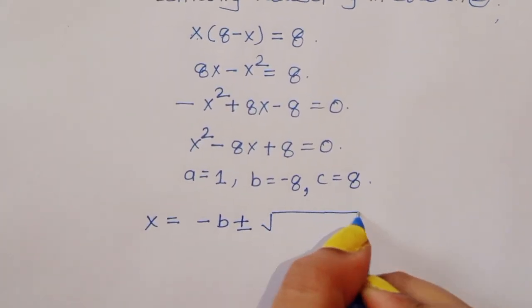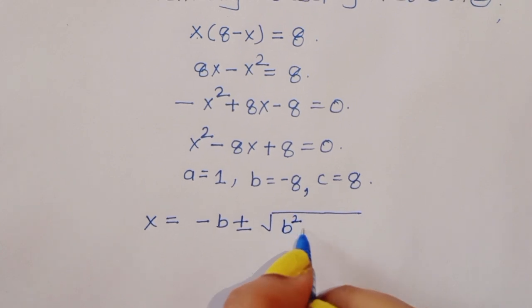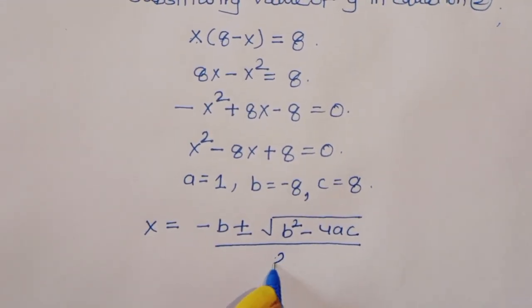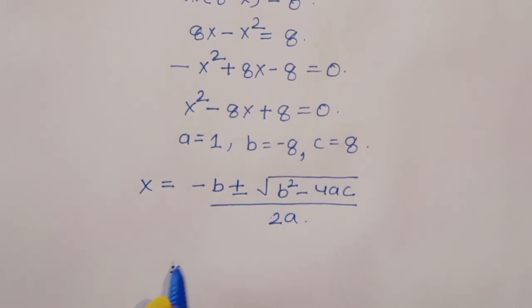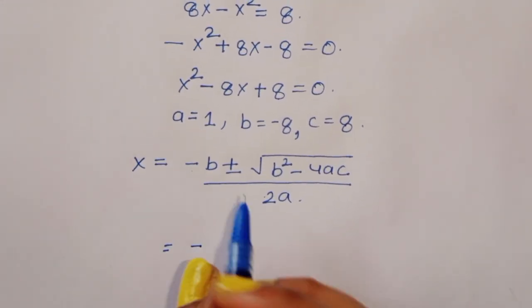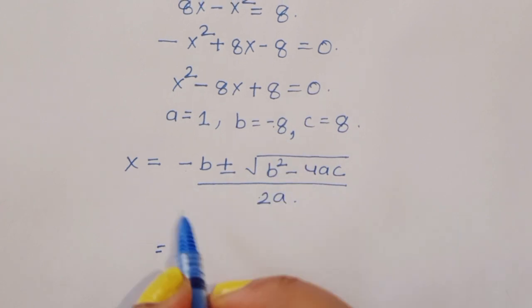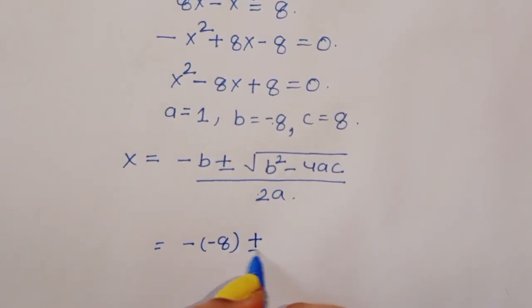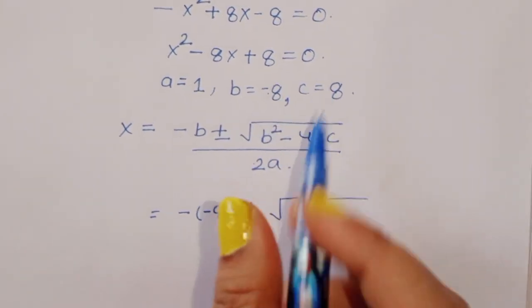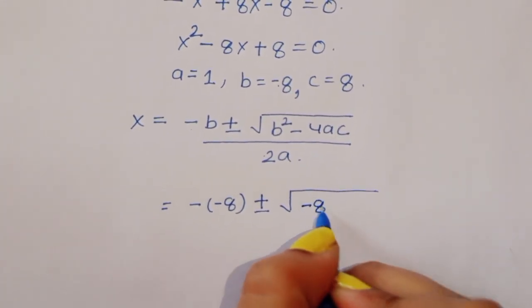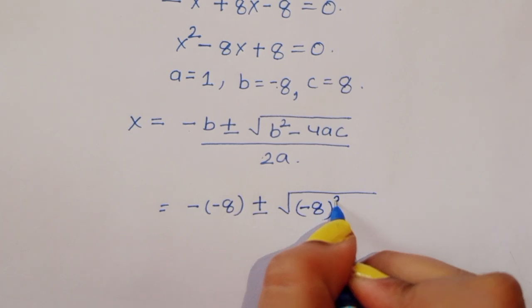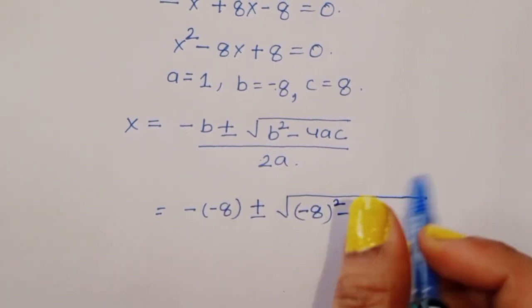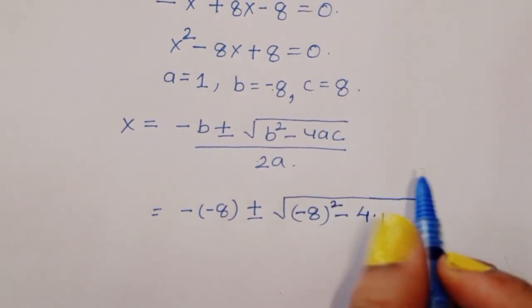Substituting the values: x is equal to minus (minus 8) plus or minus square root of (minus 8) squared minus 4 times 1 times 8, all divided by 2.